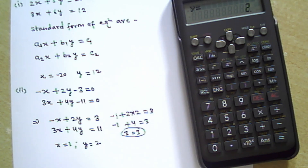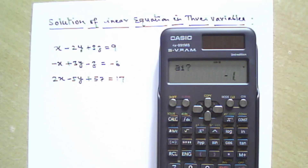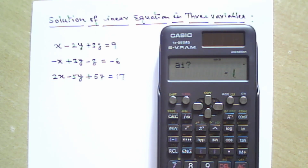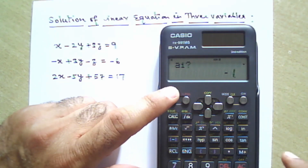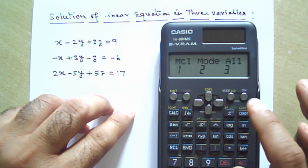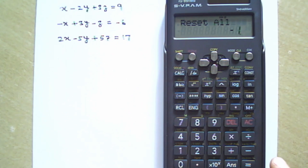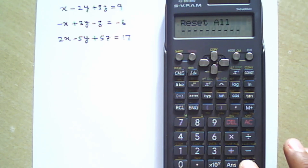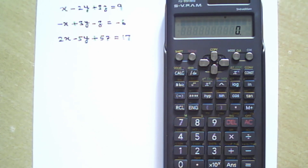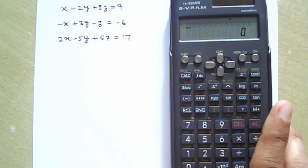Now we will solve linear equations with three variables. First you need to reset the memory — press Shift, then Mode, then press 3 to reset all. Press equal twice: press 1 then 2. Your previous two-variable example will now be cleared from the memory. Now we can solve linear equations in 3 variables.